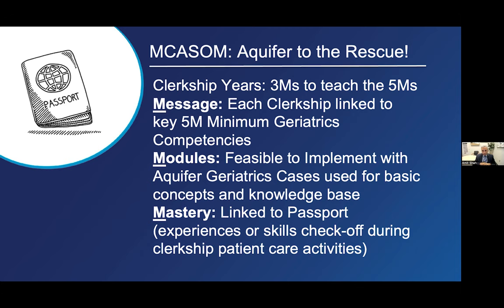Aquifer Geriatrics is tied to national competencies — in geriatrics, they're called the 5M competencies: mind, mobility, medications, what matters most, and multi-complexity. These are about 27 objectives we hope students will have by graduation. We created a model we call the 3Ms to teach the 5Ms. Every single clerkship is now linked to one of these 5M domains. Then the students do modules — the second M — which was feasible because we can assign them to students asynchronously. It's the same across campuses, and they get them all by the end of the year. But we knew we couldn't let the modules live in isolation — we needed to tie that learning into their clerkships so it wasn't a standalone extra assignment. So we created a passport, a skill check-off, essentially a virtual thing they do on our learning management system.